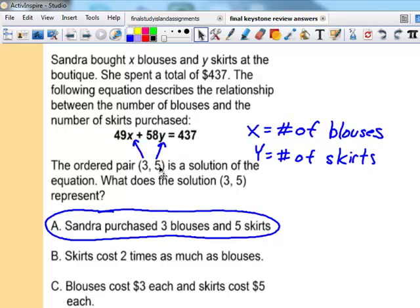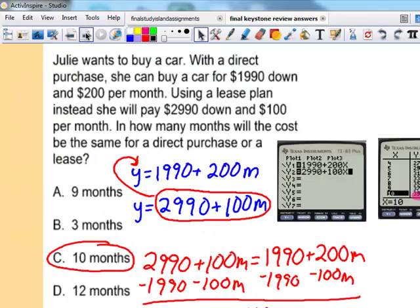If they're gonna give me an ordered pair, all they're telling me is we purchased 3 blouses and 5 skirts. This is money. Each blouse was $49. Again, put yourself in this situation. Common sense would reason out that I can plug in that point and get a total, my total bill. Read carefully.